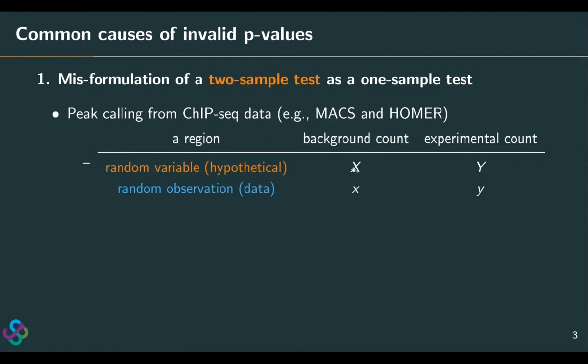For that red region, I use two uppercase notations to denote the random variables — the background count and experimental count — that we have in mind when we do statistics. And I have corresponding lowercase notations, small x and small y, for the random observations we actually have in our data. So data is what we have at hand, but the random variables are what we have in our mind. In their approach, the p-value calculation is essentially this probability: the probability that Y is greater than or equal to the observed small y, under the assumption that big Y follows a Poisson distribution with mean parameter x.